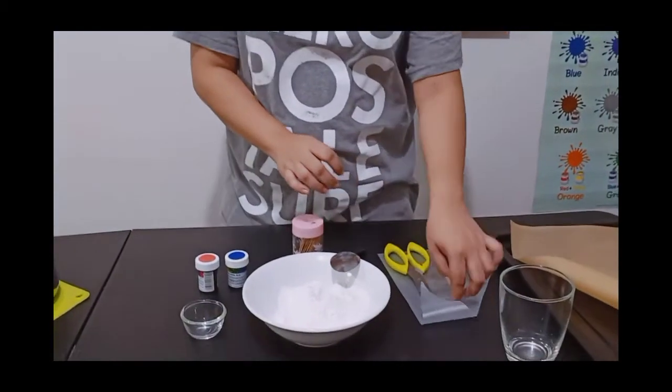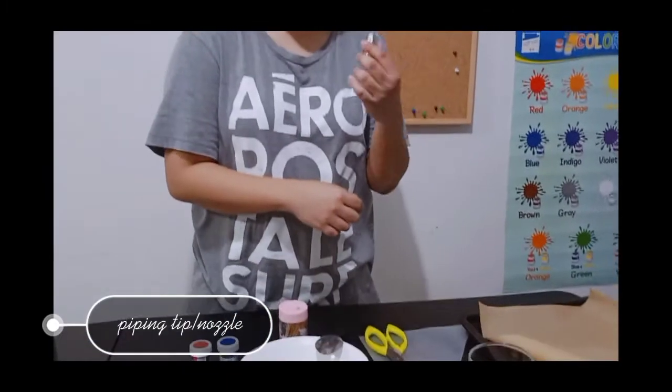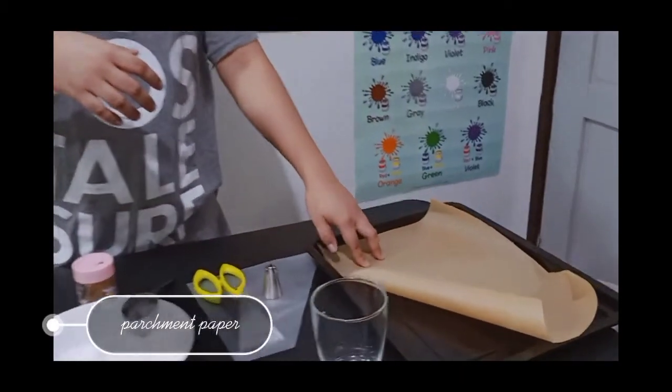And then, piping bag. Disposable. I use disposable bags because I'm lazy to wash them. And, our piping tip. This is, I think, 4B. And I'll be using another one. And then, of course, our parchment paper. And then, our baking tray. Okay, I think I forgot something. Maybe later when I remember it.